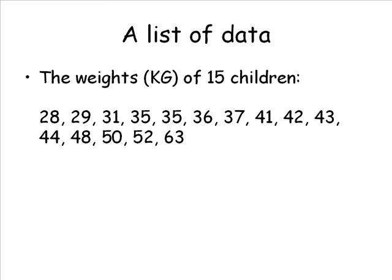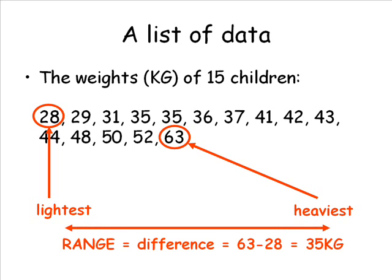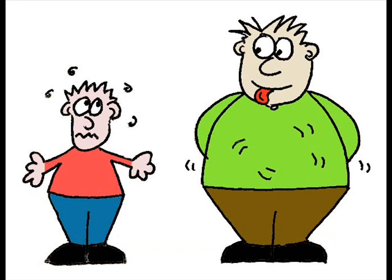I could put them in order. Now I can easily see that the lightest child weighed 28 kilograms, whilst the heaviest weighed 63. That's a difference or range of 35 kilograms. So the minimum weight is 28 kilograms, the maximum is 63 and the range is 35. The heaviest is more than twice the weight of the lightest. They could have just eaten a whole other person. How's that mental image coming along now?